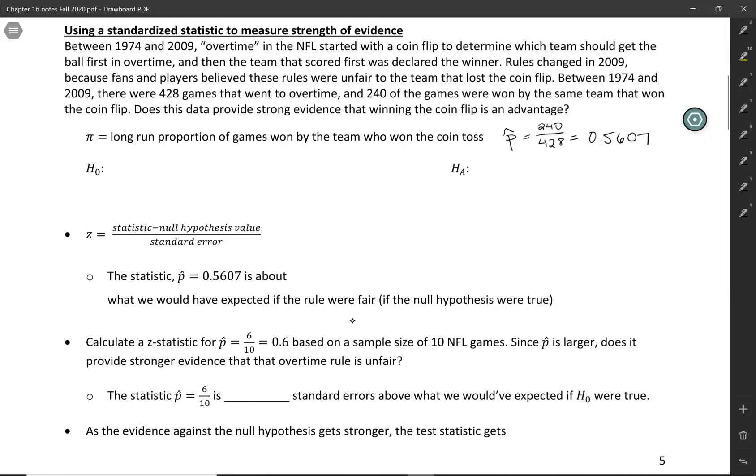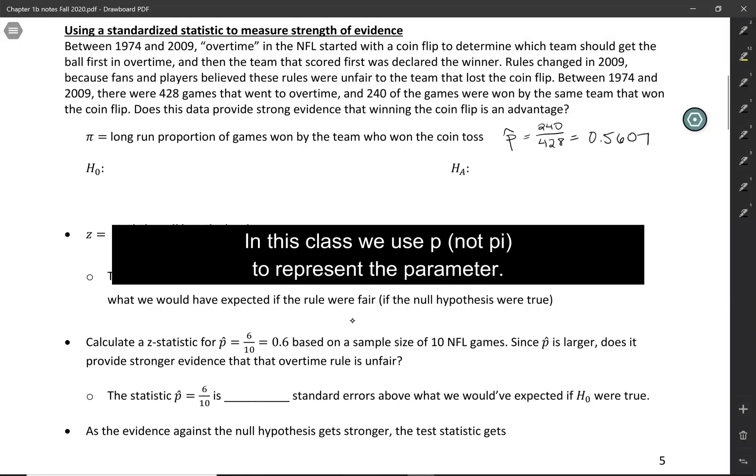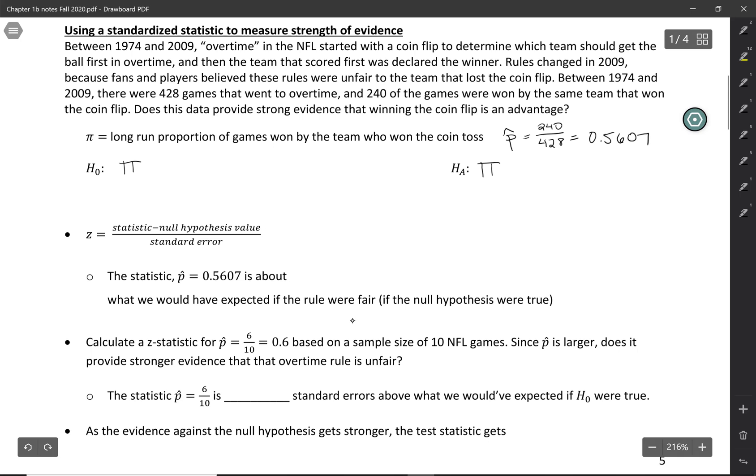Let's state our hypotheses. Hypotheses are always stated in terms of the long-run parameter. The null hypothesis always has an equal sign in it. In this case, we're testing whether the rule is fair. If the rule is fair, then the long-run proportion of games won by the team who won the coin flip should be 0.5, so the null hypothesis is that the rule is fair.